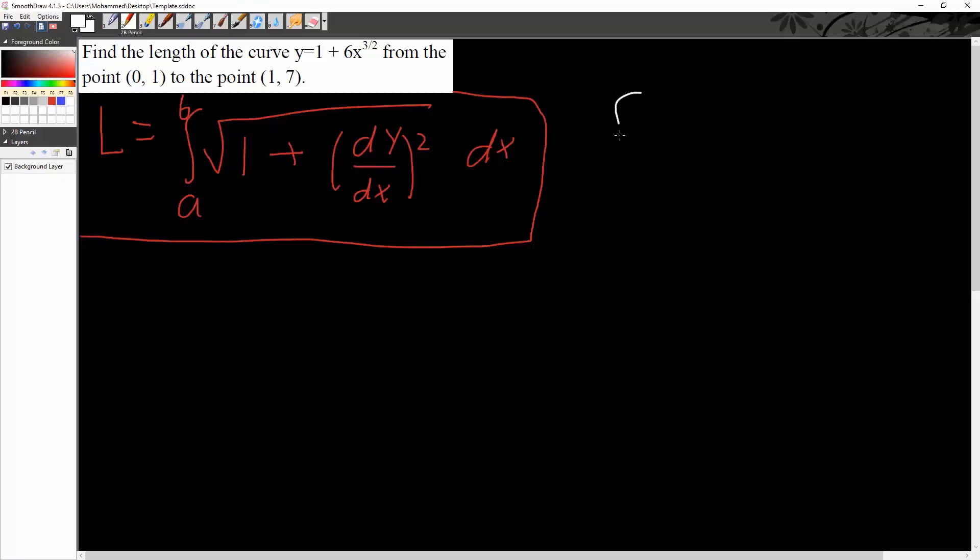So we'll have the integral from 0, the lower bound, to 1, the upper bound. We have the square root of 1 plus the derivative of this.